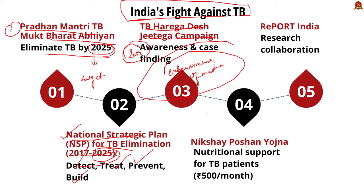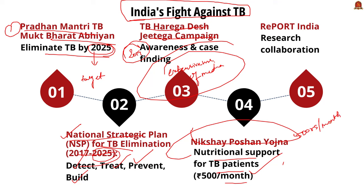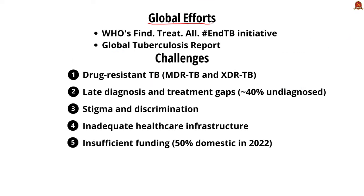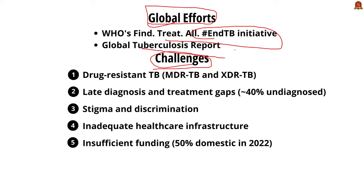The Nikshay Poshan Yojana provides nutritional support to TB patients to enhance treatment outcomes — each TB patient receives ₹500 per month during their treatment period. The REPORT India program — Regional Prospective Observational Research for Tuberculosis — is a bilateral multi-organizational collaborative effort established in 2013 under the India-US Vaccine Action Program (VAP). At the global level, the WHO launched a joint initiative called 'Find. Treat. All. #EndTB' with the Global Fund and Stop TB Partnership. The WHO has also released the Global Tuberculosis Report.